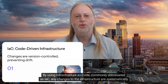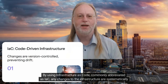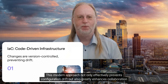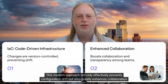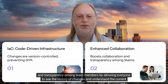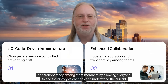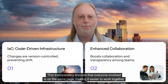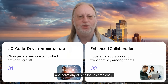By using Infrastructure as Code, commonly abbreviated as IaC, any changes to the infrastructure are systematically made through code updates, which are managed and stored in version-controlled repositories. This modern approach not only effectively prevents configuration drift, but also greatly enhances collaboration and transparency among team members, by allowing everyone to see the history of changes and understand the current state of the system, making it easier to work together and solve any arising issues efficiently.